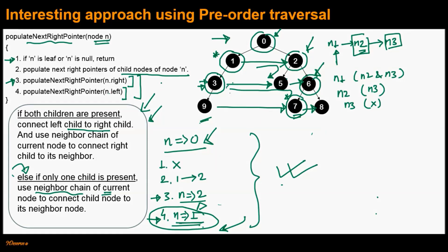One important point: we are populating the right subtree first before the left subtree. Recall that when we were at node 3 in step 2, we needed to populate the right pointer of node 9, and for that we used the neighbor chain of node 3. Because we had already populated the right pointers in the right subtree, we were able to obtain the reference to node 7 by following the neighbor chain of node 3. In general, to be able to follow the neighbor chain completely, we need to populate the next right pointers in the right subtree before the left subtree.